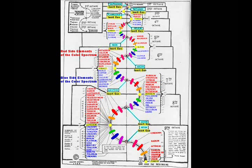Walter Russell was able to predict many elements before they were discovered in academic laboratories, including deuterium, tritium, neptunium, and plutonium. Many of the elements shown in this table have still not been discovered by corporate scientists.